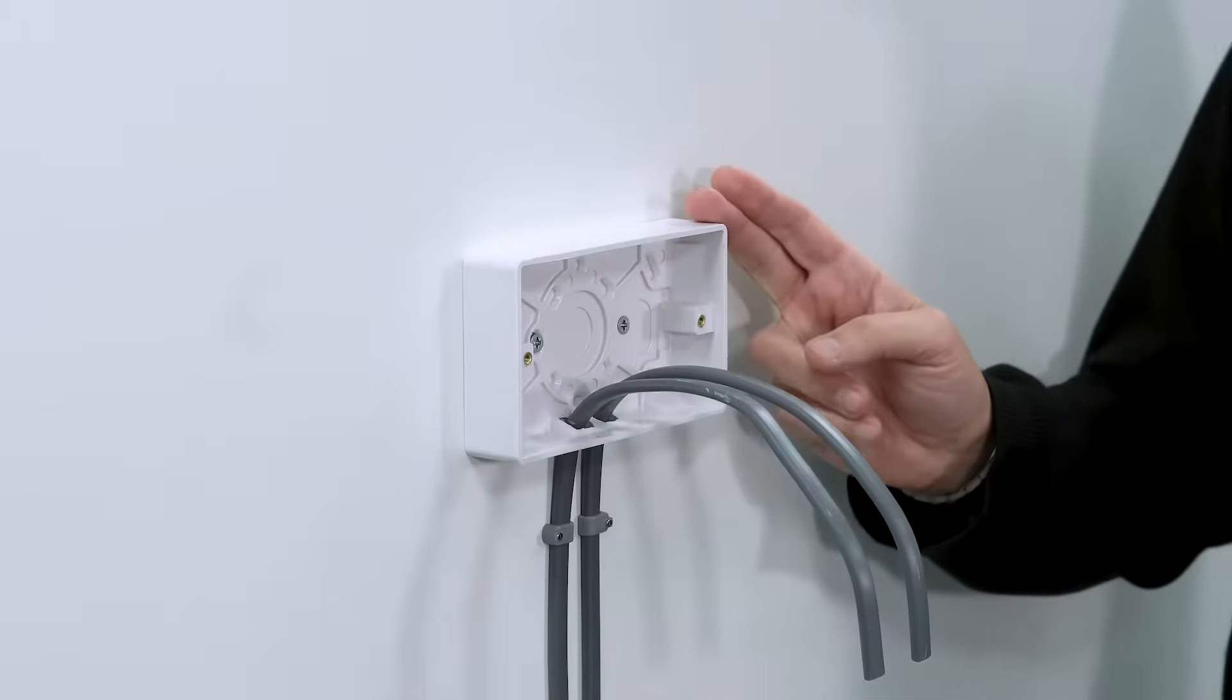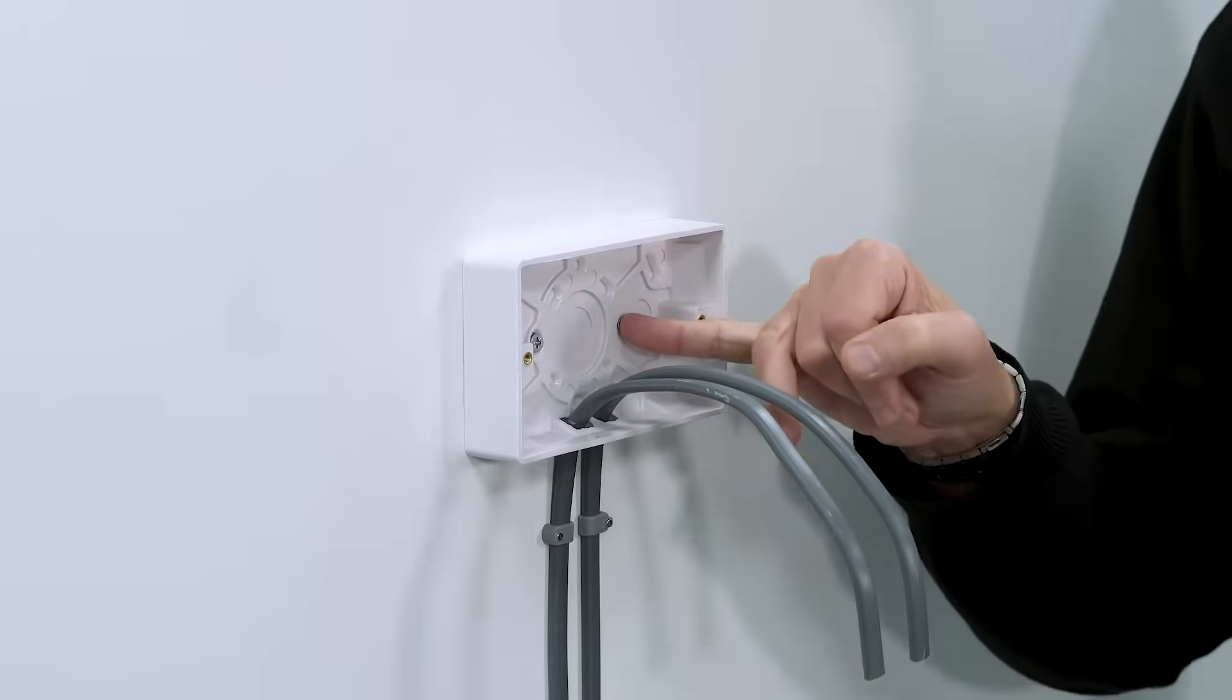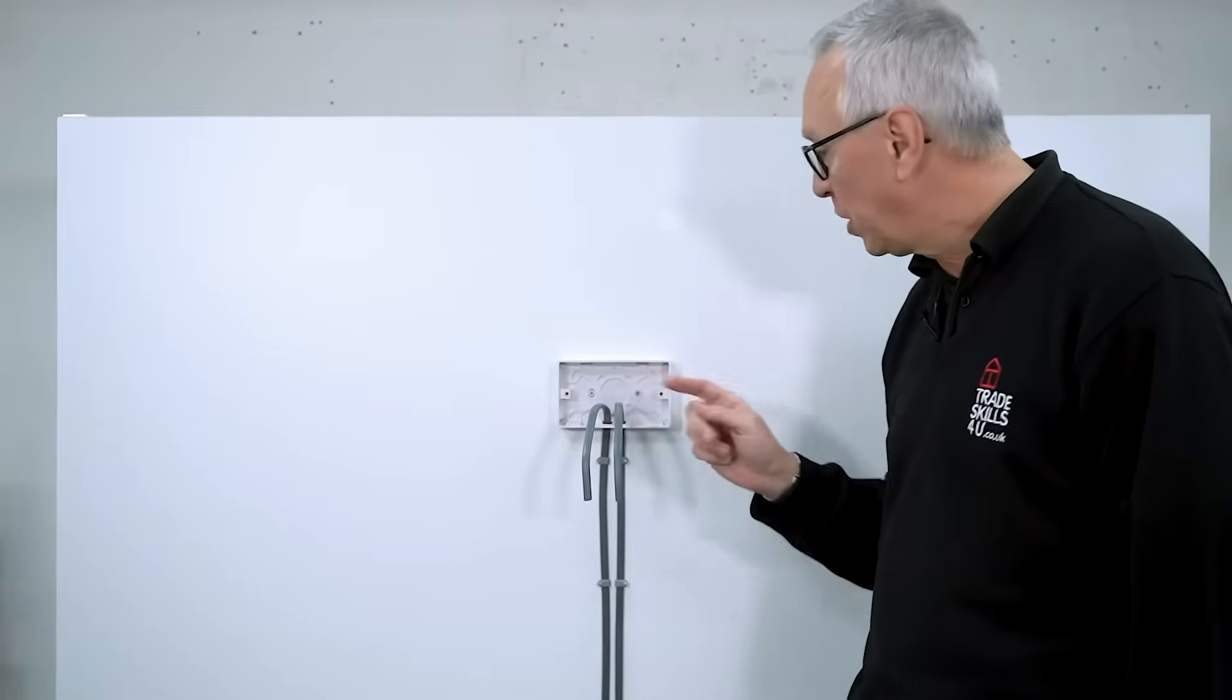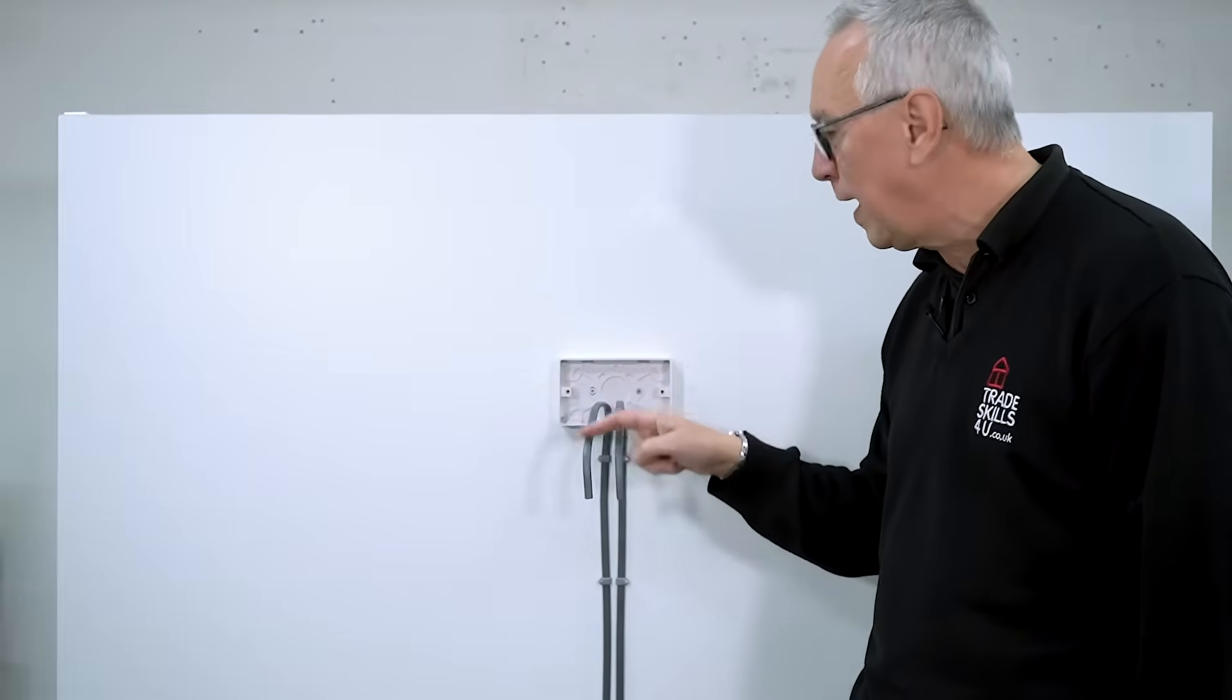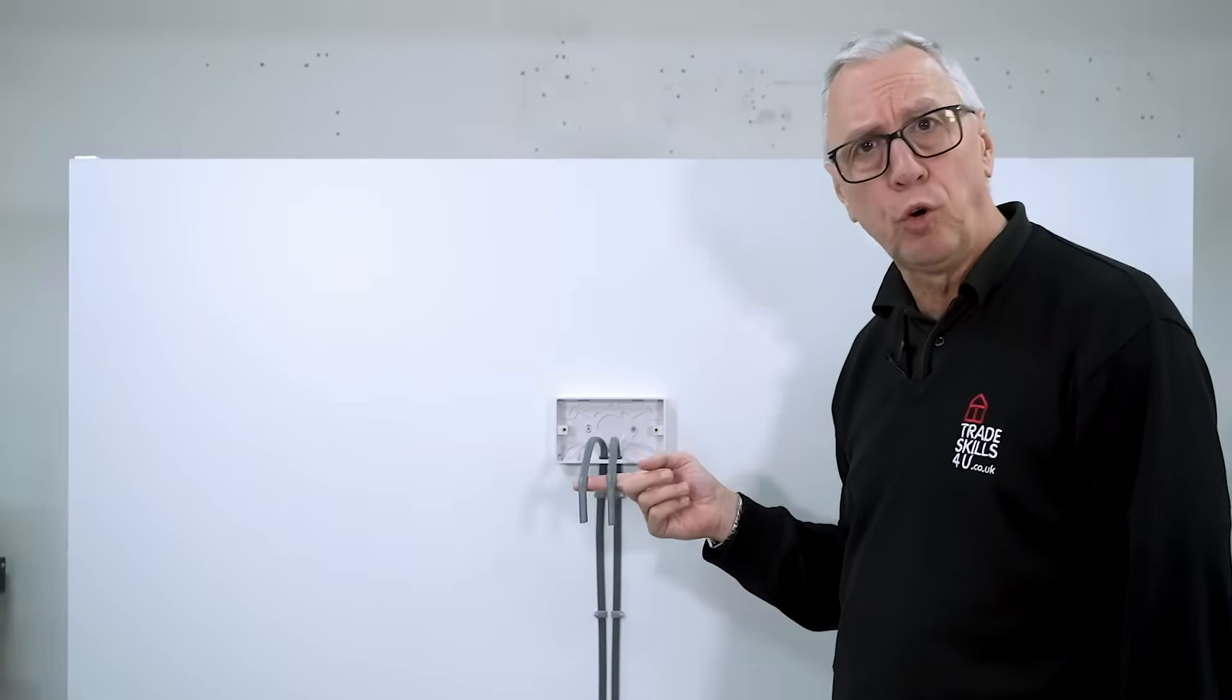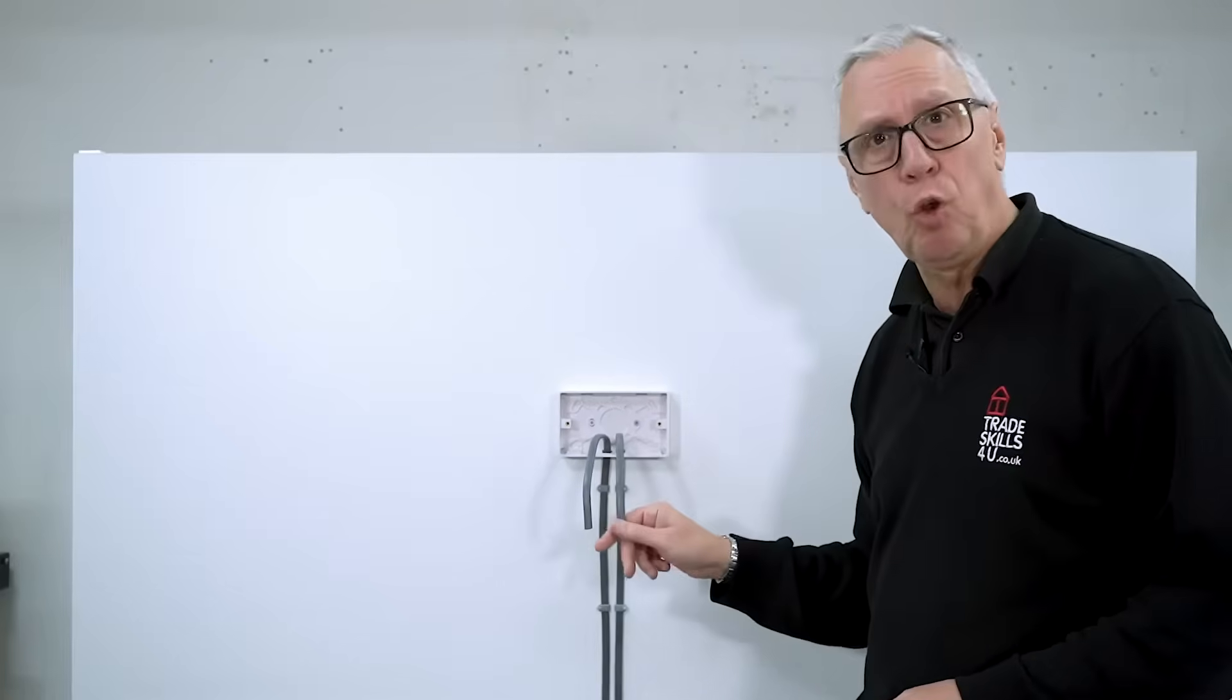When you fasten the back box to the wall, make sure that you don't over-tighten the screws because if you do you'll crack the box. Always make sure that you've got enough cable coming through to terminate the conductors. If it's too short, we might not get the conductors in the terminals, and if it's too long, we may have trouble fastening the socket on.